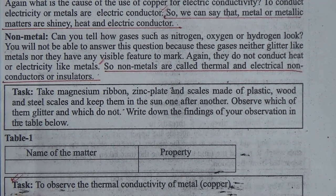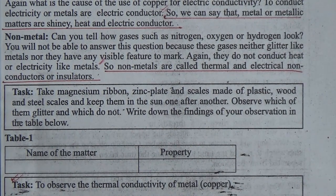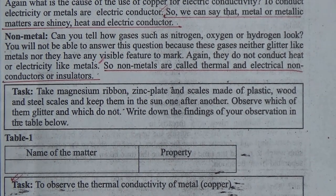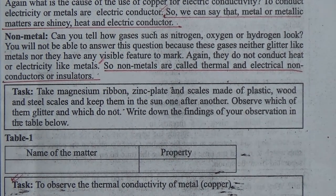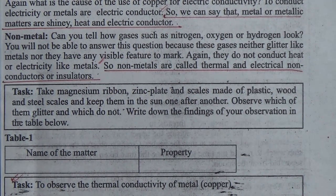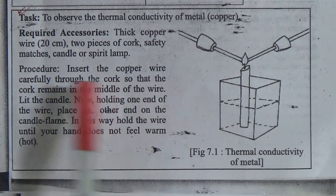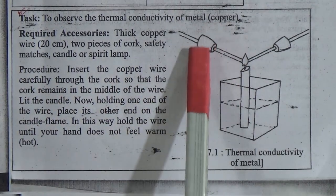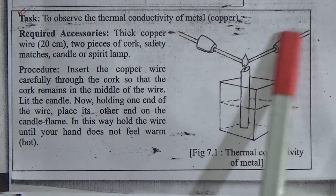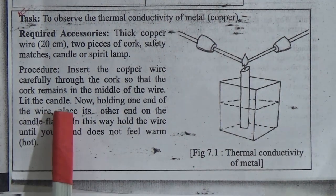Task: To observe the thermal conductivity of the metal copper. Required accessories: thick copper wire, two pieces of cork, safety matches, and a candle or spirit lamp. Procedure: Insert the copper wire carefully through the cork so that the cork remains in the middle of the wire. Note that cork is not a thermal conductor. Light the candle.